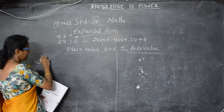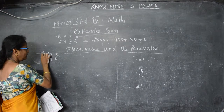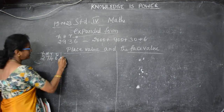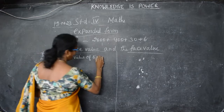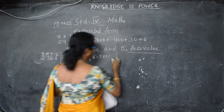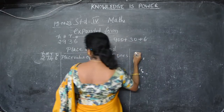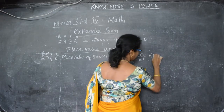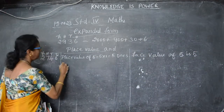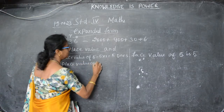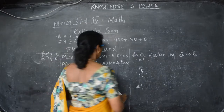Suppose if they are given the numbers like this: 2,745. So in this we have ones, tens, hundreds, and thousands. So we have to write according to the digits. The place value of 5 is equal to 5 × 1, that is 5 ones. In the tens place, place value of 4 is equal to 4 × 10, that is 4 tens — 40.